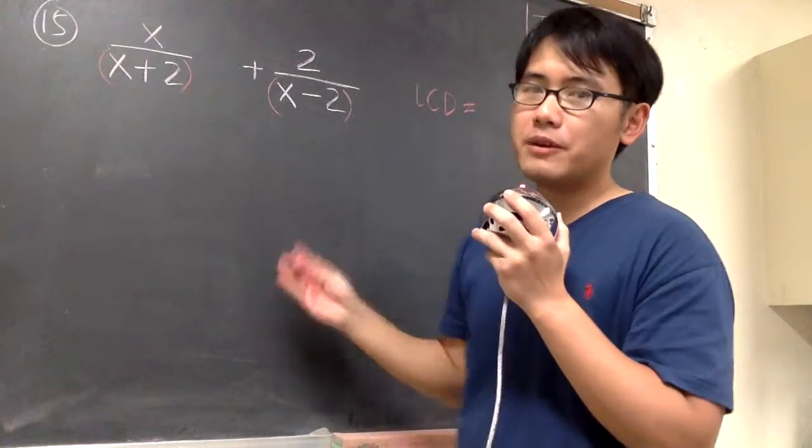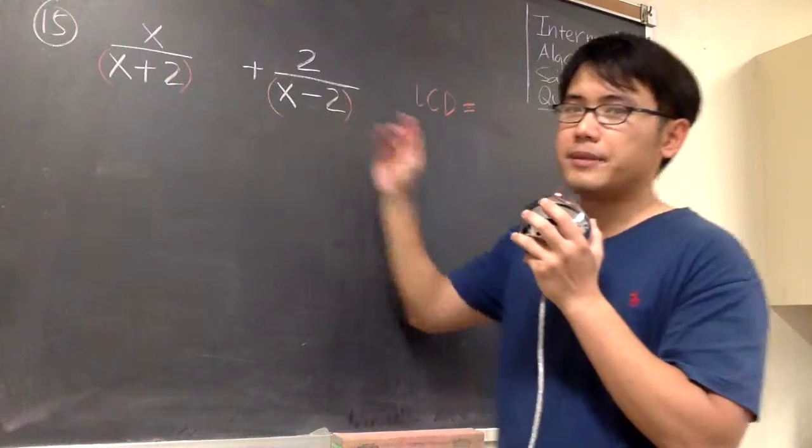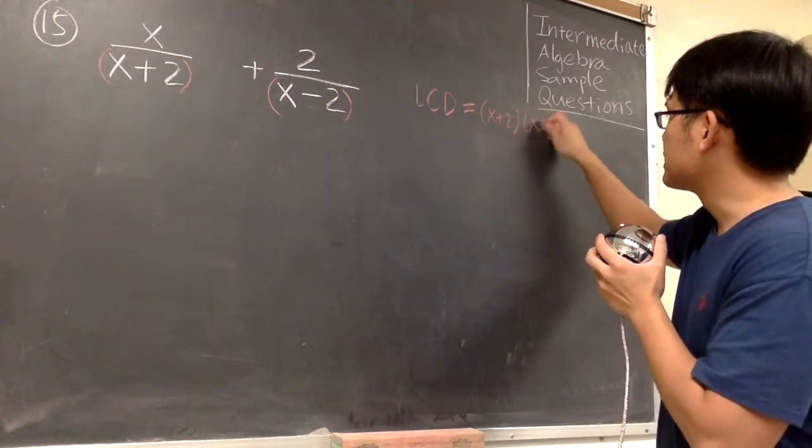Because they have no common factor, for the lowest common denominator, we just multiply them together. So we have x plus 2 times x minus 2.